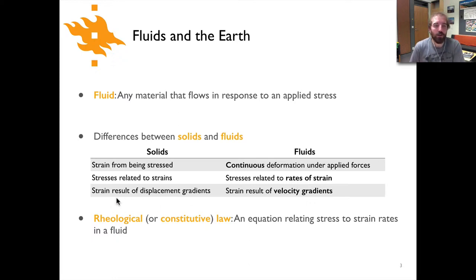Lastly, the strain in a solid is the result of a displacement gradient whereas strain in fluids will be the result of velocity gradients. So a displacement gradient would simply be a change in the amount of displacement within the solid whereas a velocity gradient would be change in the rate of displacement within the solid.